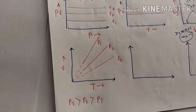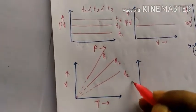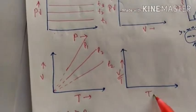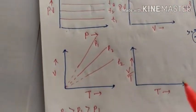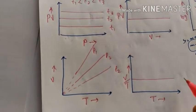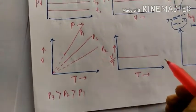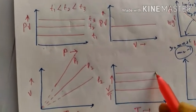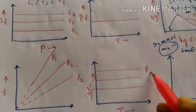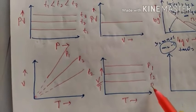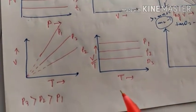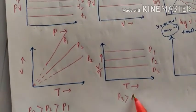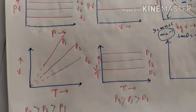Next is the V/T versus T graph, which gives lines parallel to the x-axis. At different pressures P1, P2, and P3, we get different parallel lines, where P3 is greater than P2 is greater than P1.